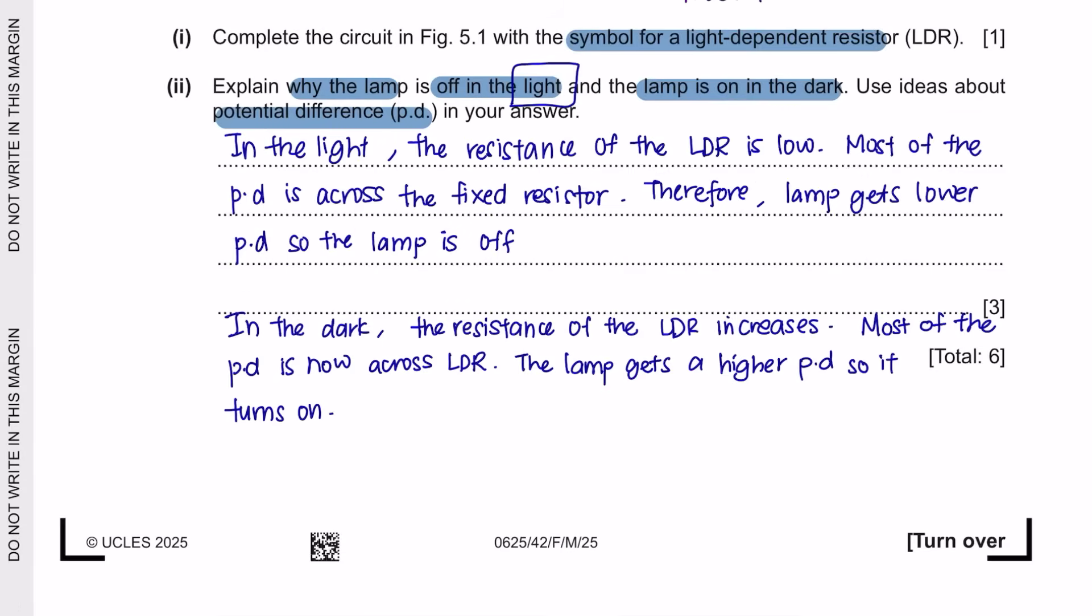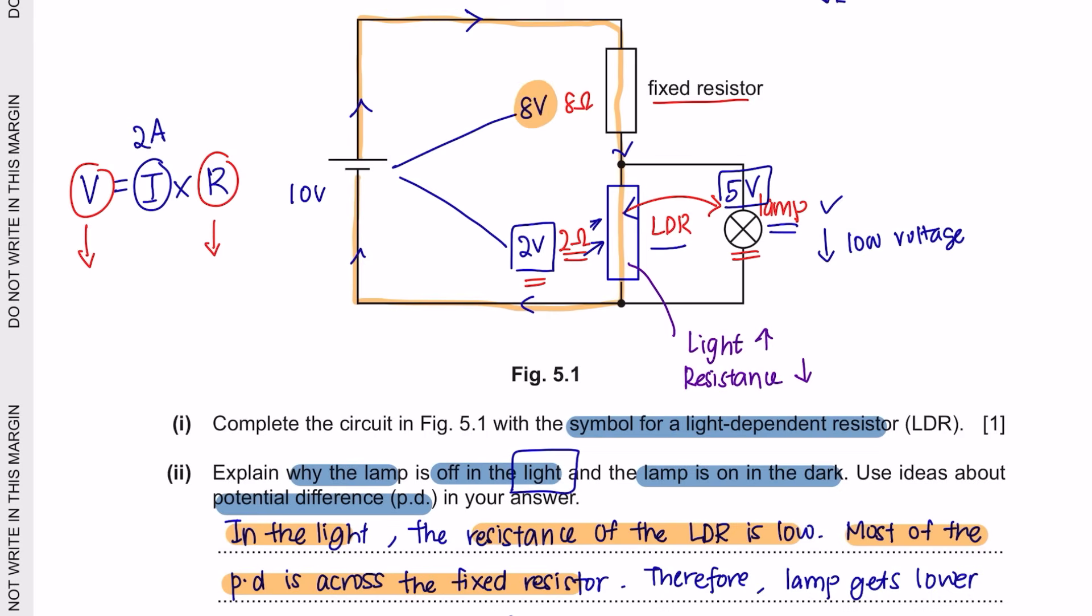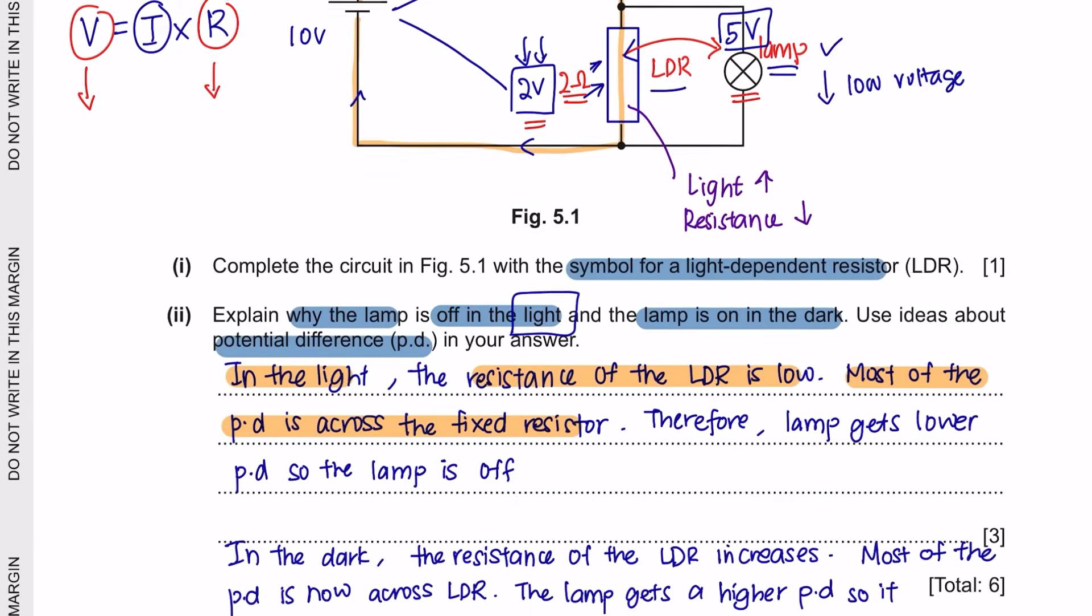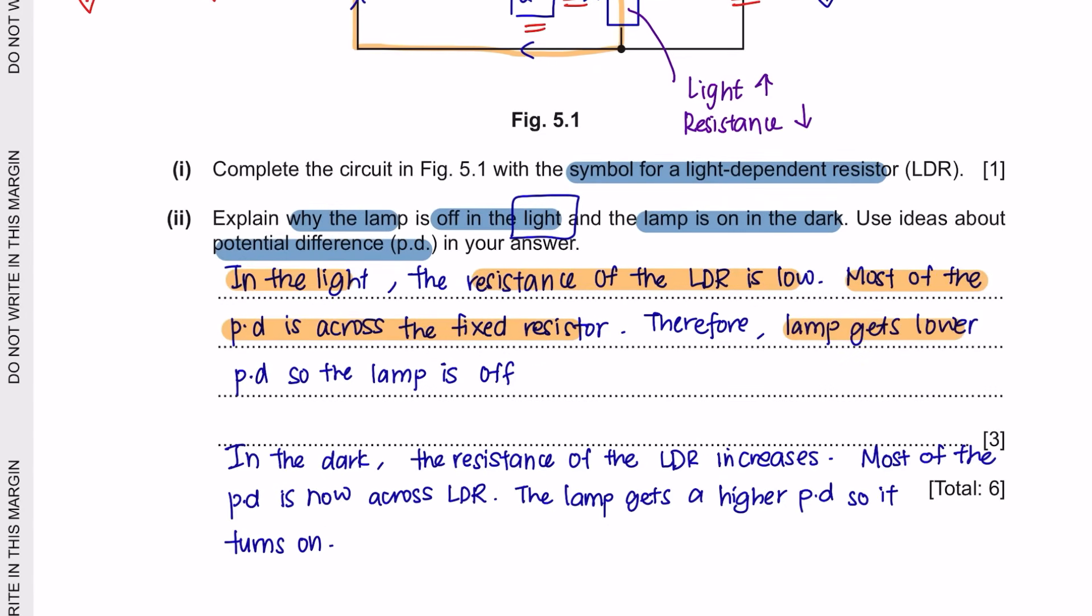So to explain, we will say that in the light, the resistance of the LDR is low. So most of the potential difference goes to the fixed resistor. Most of the potential difference will be given to the fixed resistor because the potential difference for the LDR decreases. Therefore, the lamp gets lower potential difference. So the lamp is off.